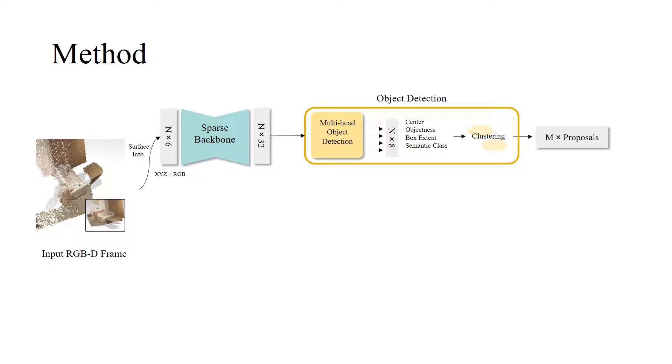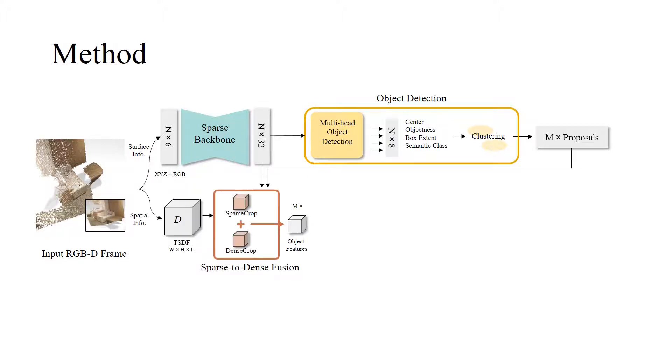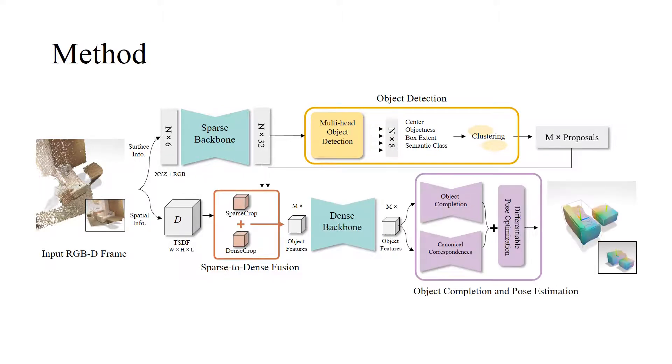From each input frame, our method extracts features with a sparse convolutional backbone, which informs our 3D object detection. We then fuse both sparse and dense features and crop the resulting dense features from each object-detected box. This dense output enables joint estimation of object completion masks as well as correspondences as canonical coordinates.